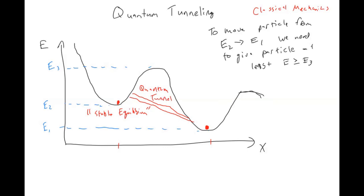The particle never gets up to energy E3 to overcome the amount of energy it needs to get into this energy one state, and yet it is able to, due to this effect called quantum tunneling.